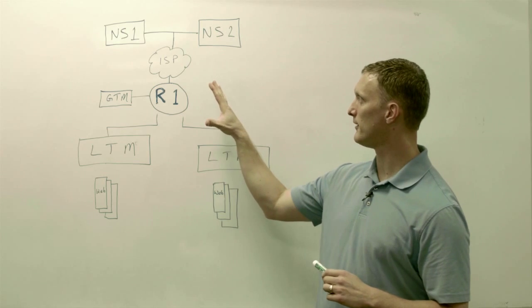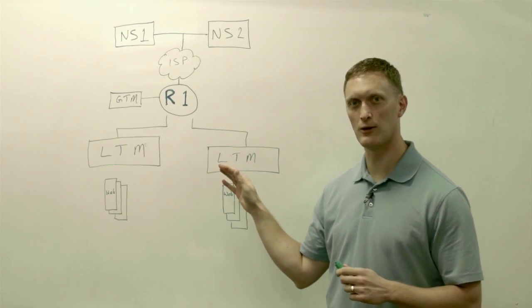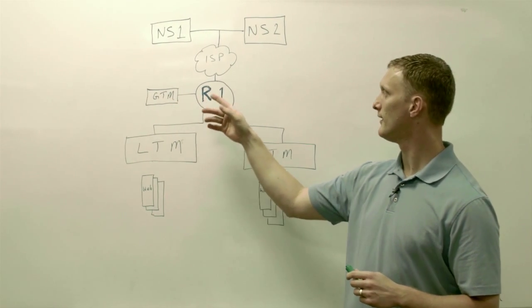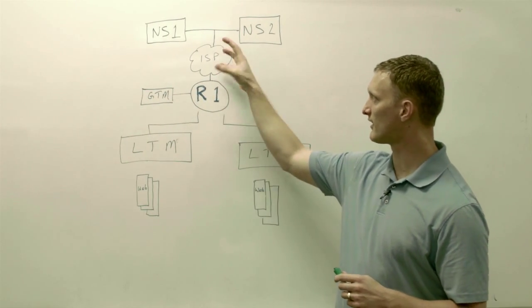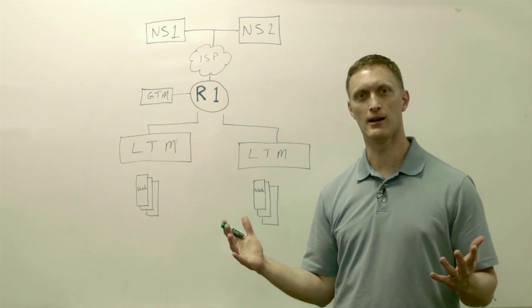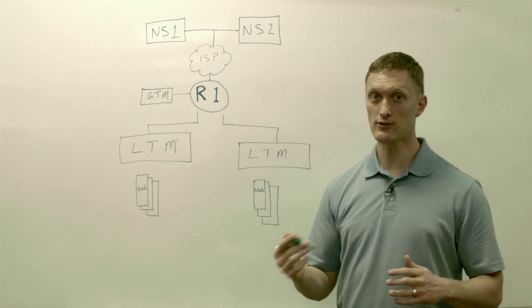We have this diagram up here with a couple of LTMs load balancing local traffic, maybe a GTM over here routing DNS traffic, a router, an ISP, the cloud up here, and a couple of name servers.